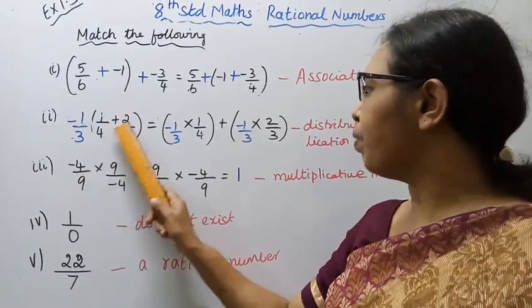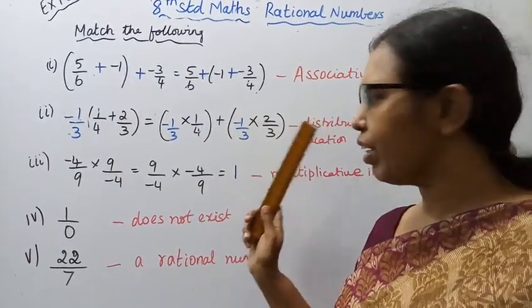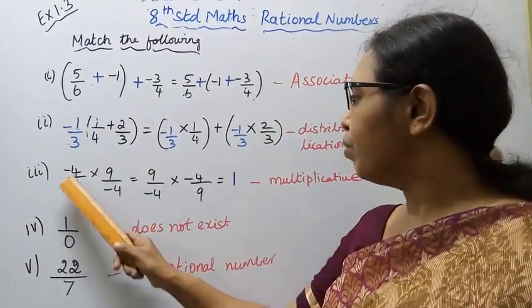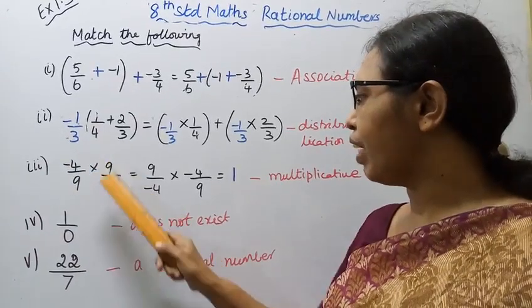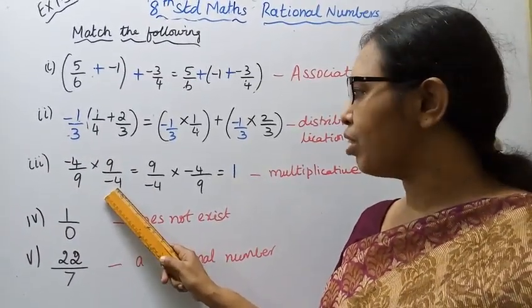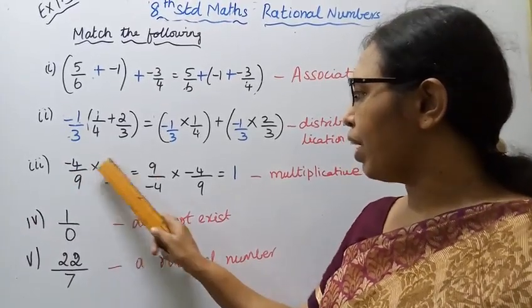One by four plus minus one by three into two by three. It is minus four by nine into nine by minus four. Multiplicative inverse.